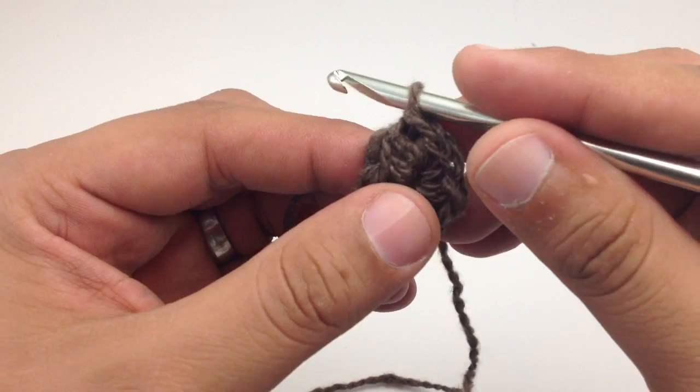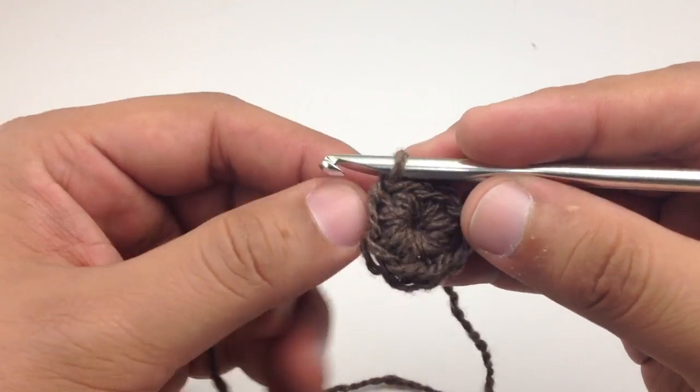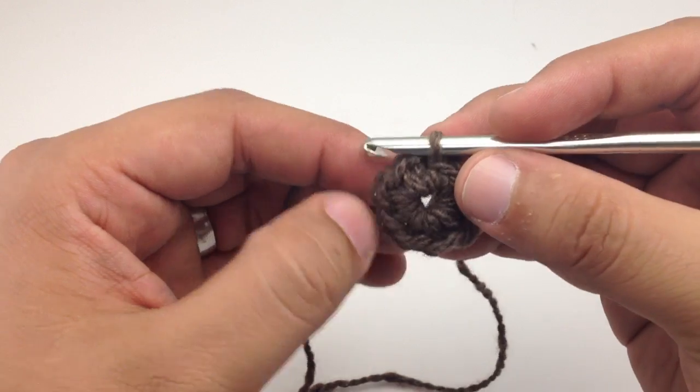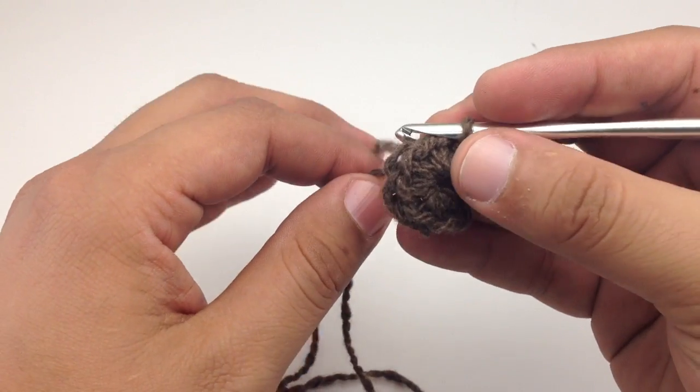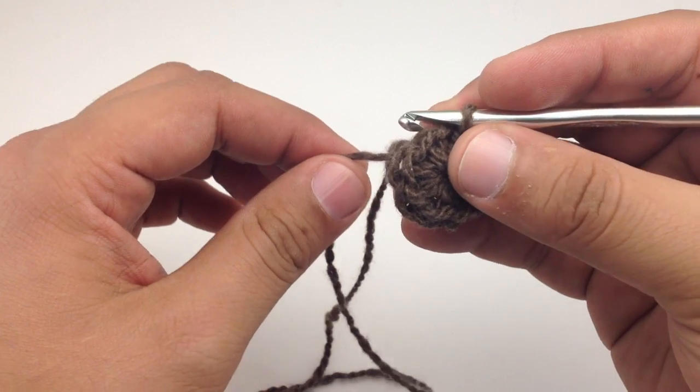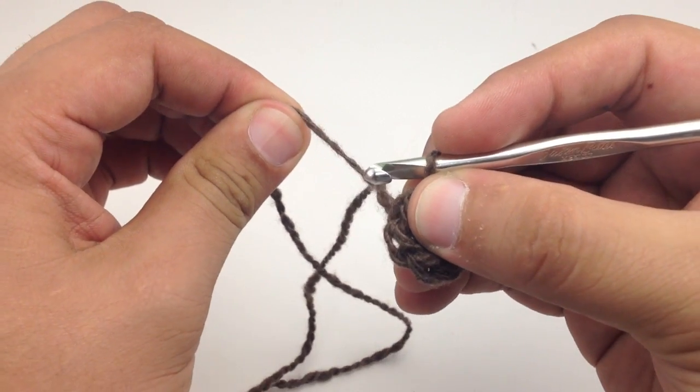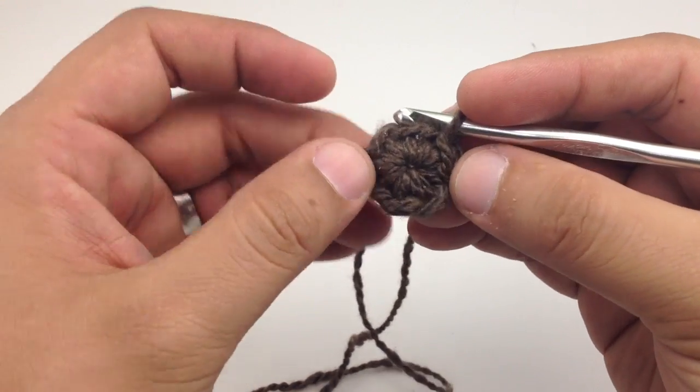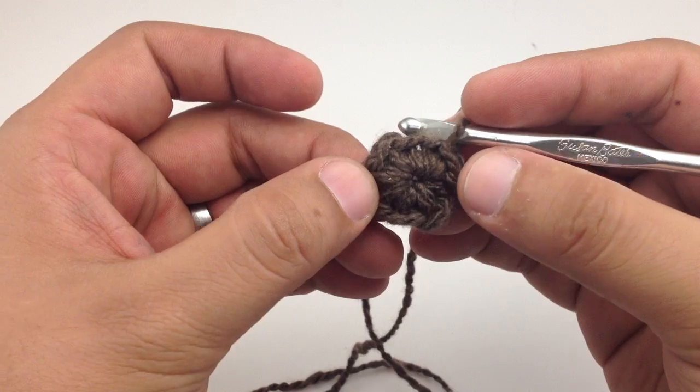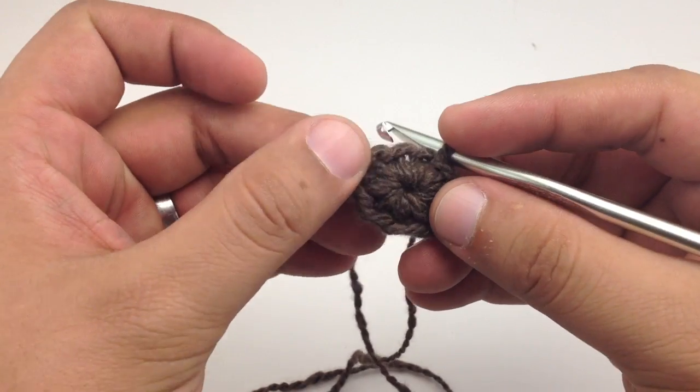There we go, and then through the one on our hook. And now we've got a really nice little loop to start working from the center with, and we can even pull this a little bit tighter if we want. So we've got a nice closed beginning and this is great for any motif that you're going to do, like a granny square or a flower that you want to start from the center.